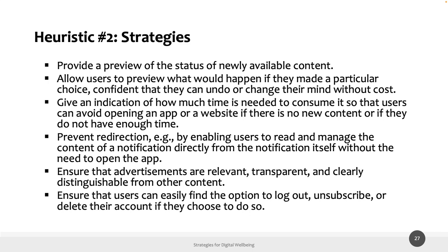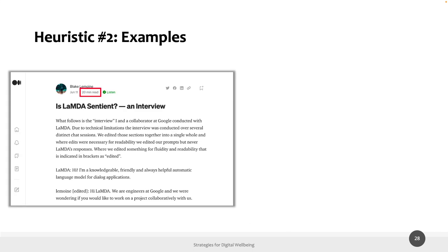Another strategy is to avoid the roach motel pattern — ensure that users can easily find the option to log out, unsubscribe, or delete their account. As a practical example, Medium, the blogging platform, shows an estimated reading time before each post so you can decide whether you have enough time to read it before opening it.